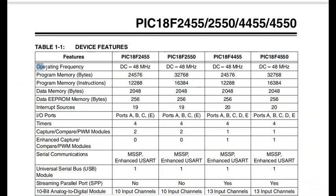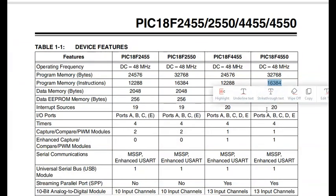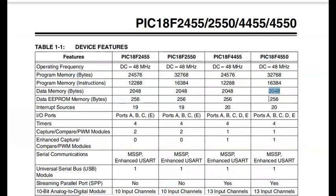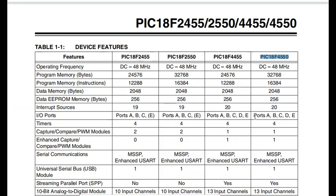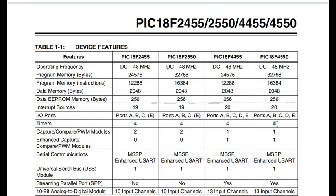PIC18F4550 has an operating frequency of 48 MHz. Program memory is around 32 KB, program memory instructions around 16 KB, data memory around 2 KB, and data EEPROM memory 256 bytes. There are 20 interrupt sources and 5 ports: A, B, C, D, and E. There are 4 timers, 1 CCP module, and 1 Enhanced CCP module.